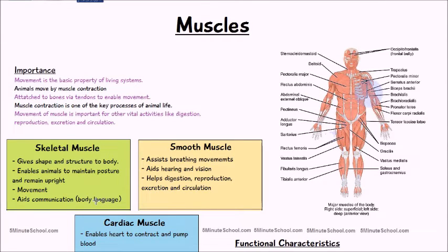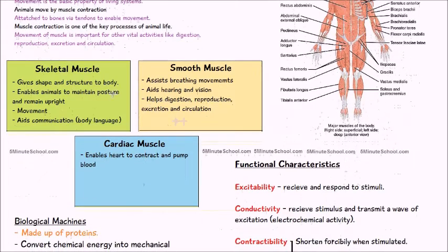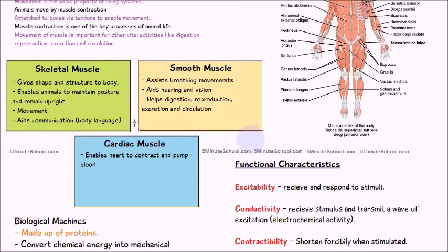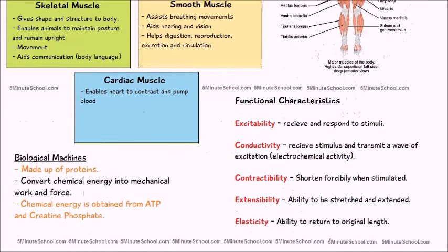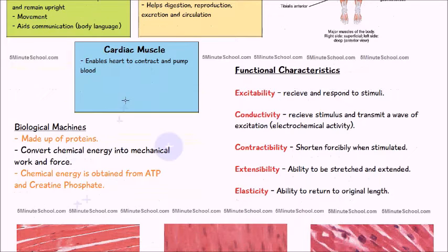We have three types of muscle: skeletal, smooth, and cardiac. Skeletal muscle gives shape and structure to the body, enables the animal to maintain posture and remain upright, and also enables movement and communication. Smooth muscle helps in breathing, aids hearing and vision, and helps digestion, reproduction, excretion, and circulation. Finally, cardiac muscle makes up the heart.